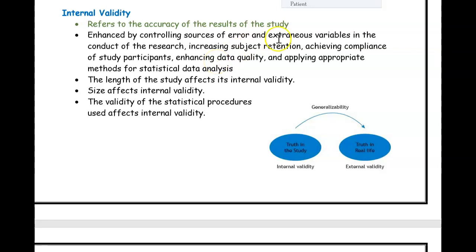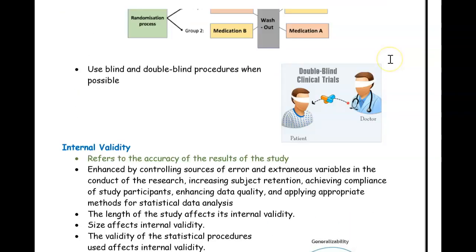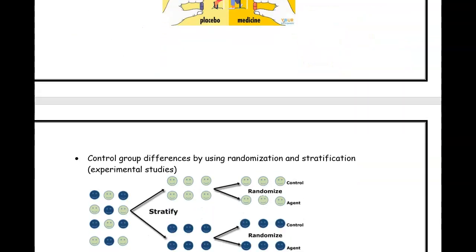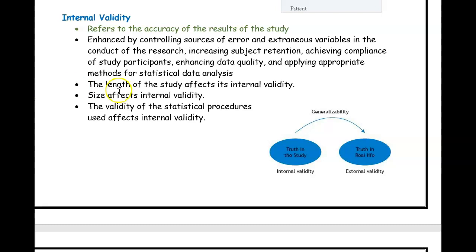Some of the things that strengthen internal validity include getting rid of extraneous variables — ensuring participants are in a comfortable environment, not too loud, not pressed for time, not too tired, because all of that can affect your study. Having a large sample size, such as a thousand people versus five, is better. Collecting good data and using the right data analysis — the right math to calculate your findings — all make the study stronger and increase internal validity.